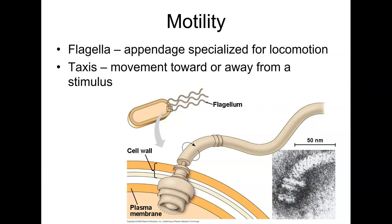Bacteria also have a flagellum, which allows for movement. This is an appendage that's specialized for movement, for motility. About half of all prokaryotes are able to do what's called taxis — that's the movement toward or away from a stimulus.